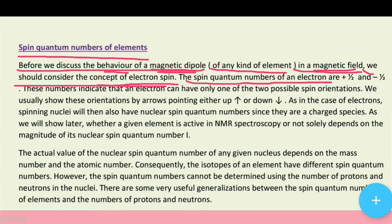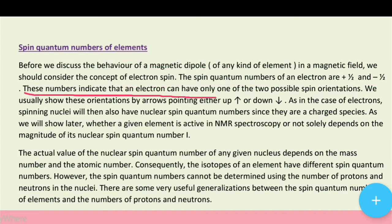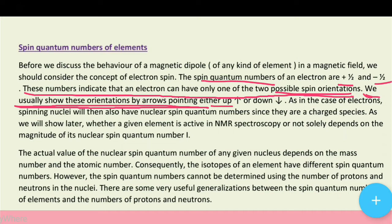The spin quantum numbers of an electron are plus half and minus half. Jo spin quantum numbers hain electron ka, woh hote hain plus half or minus half. These numbers indicate that the electron can only have two possible spin orientations. We usually show these orientations by arrows pointing either up or down.